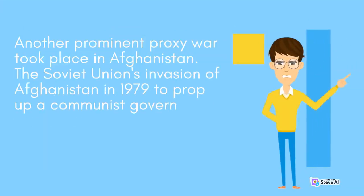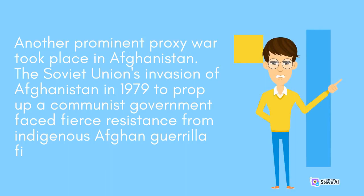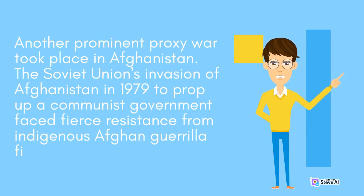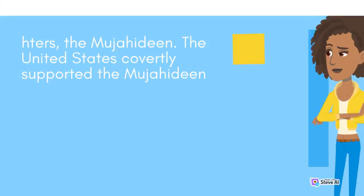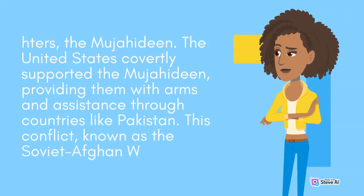Another prominent proxy war took place in Afghanistan. The Soviet Union's invasion of Afghanistan in 1979 to prop up a communist government faced fierce resistance from indigenous Afghan guerrilla fighters, the Mujahideen. The United States covertly supported the Mujahideen, providing them with arms and assistance through countries like Pakistan.